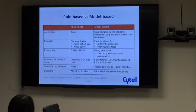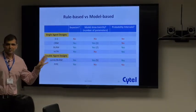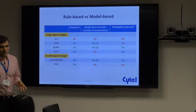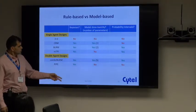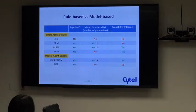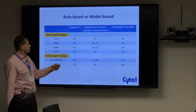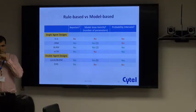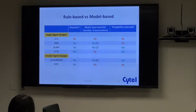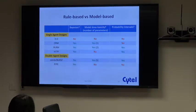The one thing I wanted to mention is this comparison table showing how the methods available in EAST compare in terms of utilizing the Bayesian philosophy — which is pretty much everything except the three-plus-three — modeling the dose-toxicity relationship, how many parameters they involve, which includes CRM and the Bayesian logistic regression model for dual and single agents, and whether they utilize toxicity probability intervals or a point estimate for toxicity.